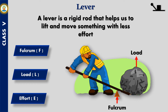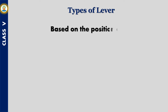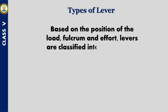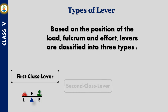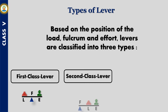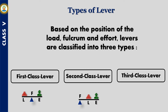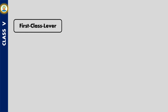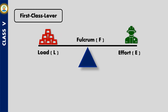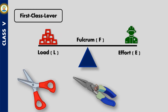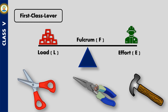The load is the force that needs to be moved, and the effort is the force that needs to be applied. Based on the position of the load, fulcrum, and effort, levers are classified into three types. In a first class lever, the fulcrum is placed between the effort and the load. The seesaw in your school playground is a first class lever — scissors, claw hammers, and pliers are other examples.